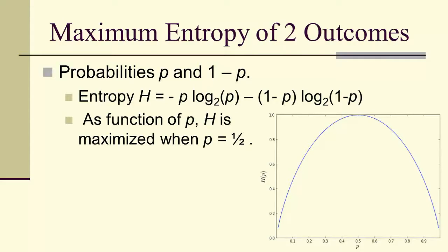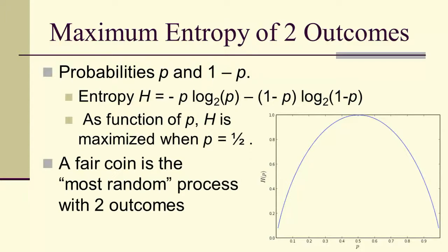...an experiment with only two possible outcomes has maximum entropy. So in some sense, a fair coin is the most random process with two outcomes, i.e., the one with maximum entropy.